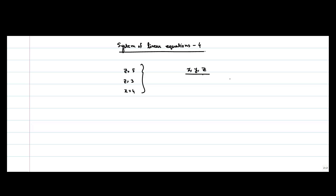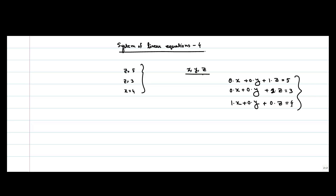So the first equation is basically 0 times x plus 0 times y plus 1 times z equal to 5. The second equation is 0 times x plus 0 times y plus 1 times z equal to 3. And for the last one, 1 times x plus 0 times y plus 0 times z equal to 4. So these are three equations in three variables x, y, z.